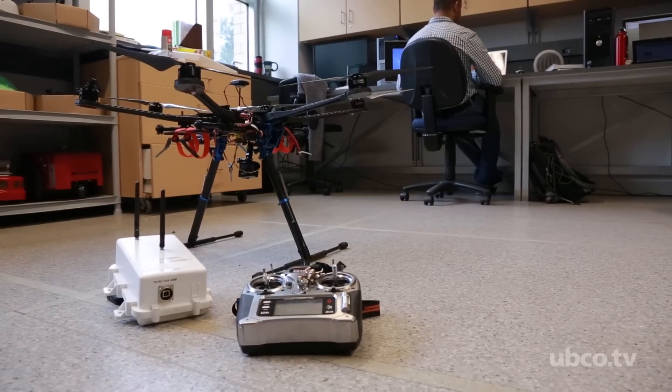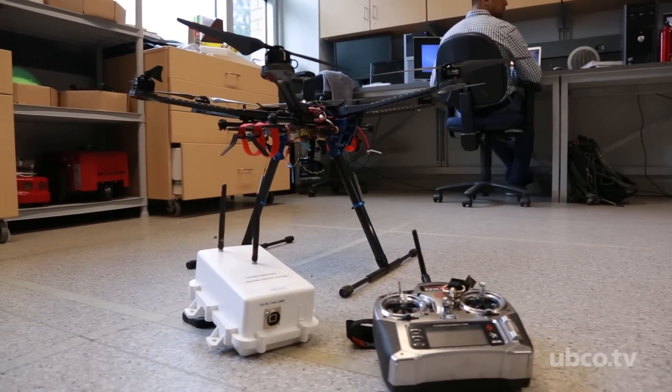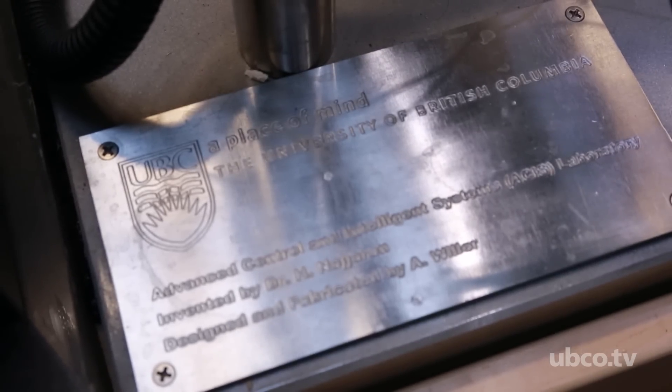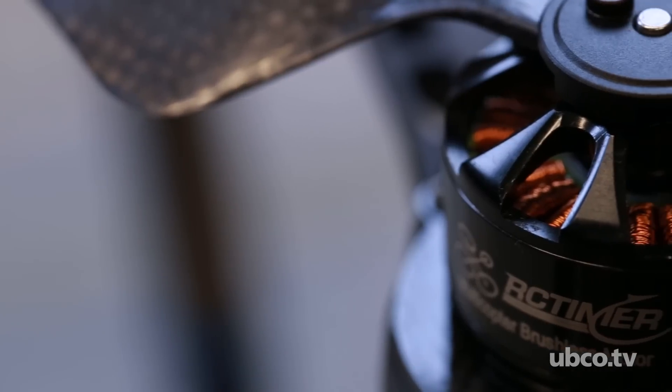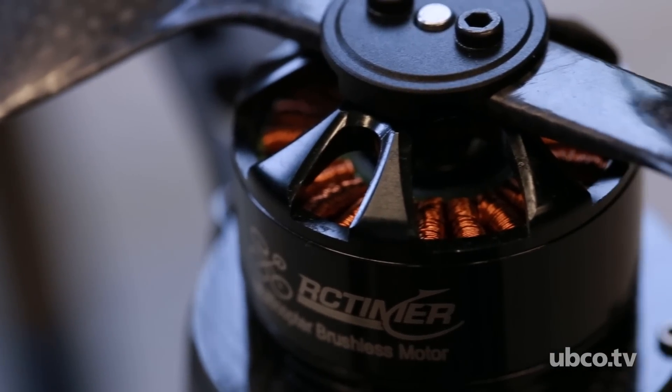If there is any piece that is dull, dirty or dangerous, we can remove that need for human being in it and automate the system. My name is Homayun Najjaran. I'm an associate professor at the School of Engineering, University of British Columbia, Okanagan campus.